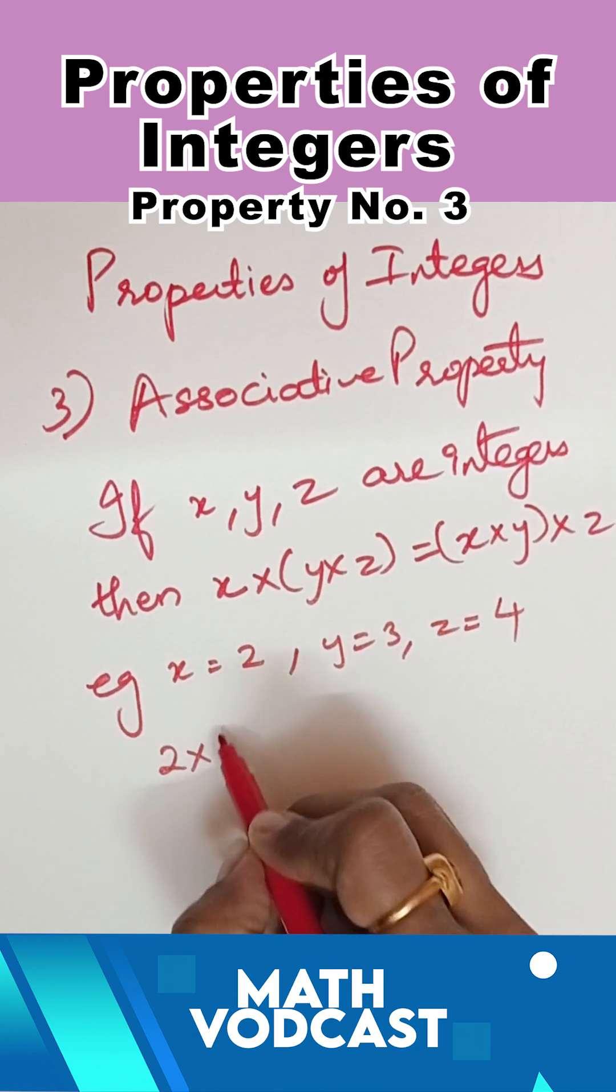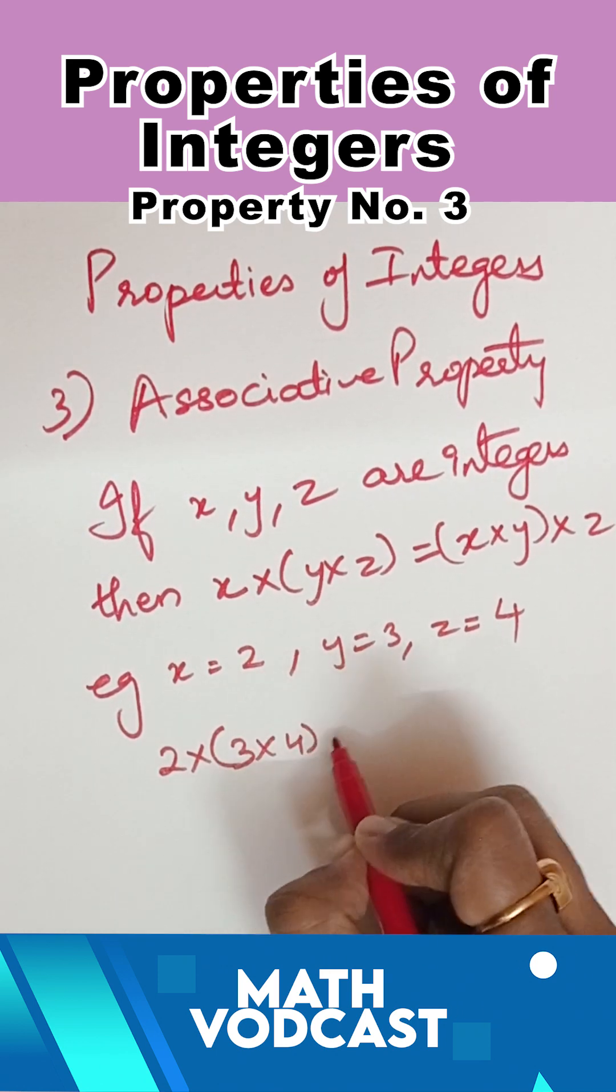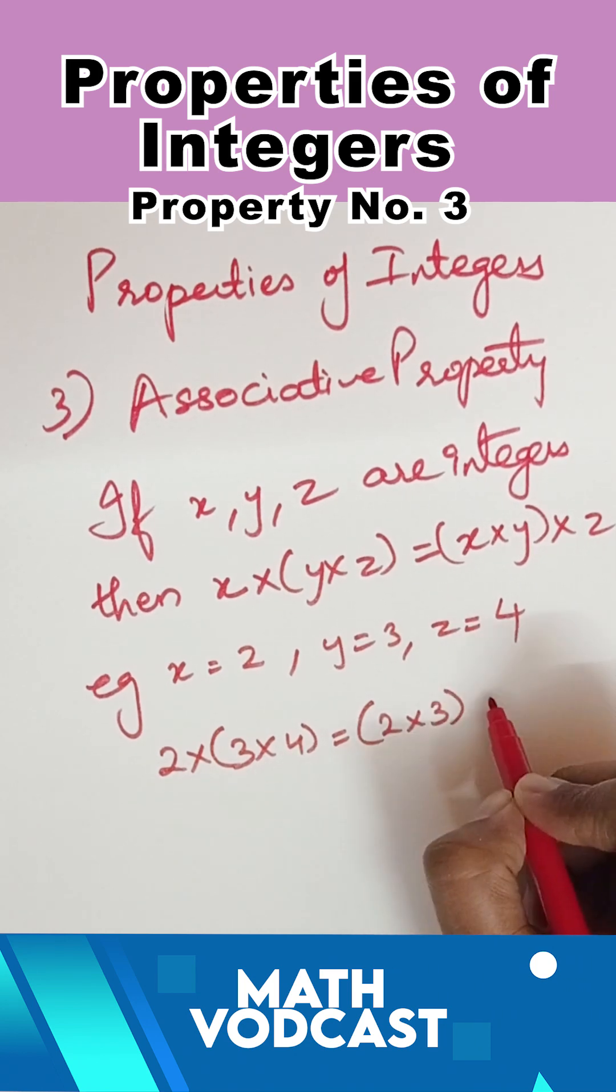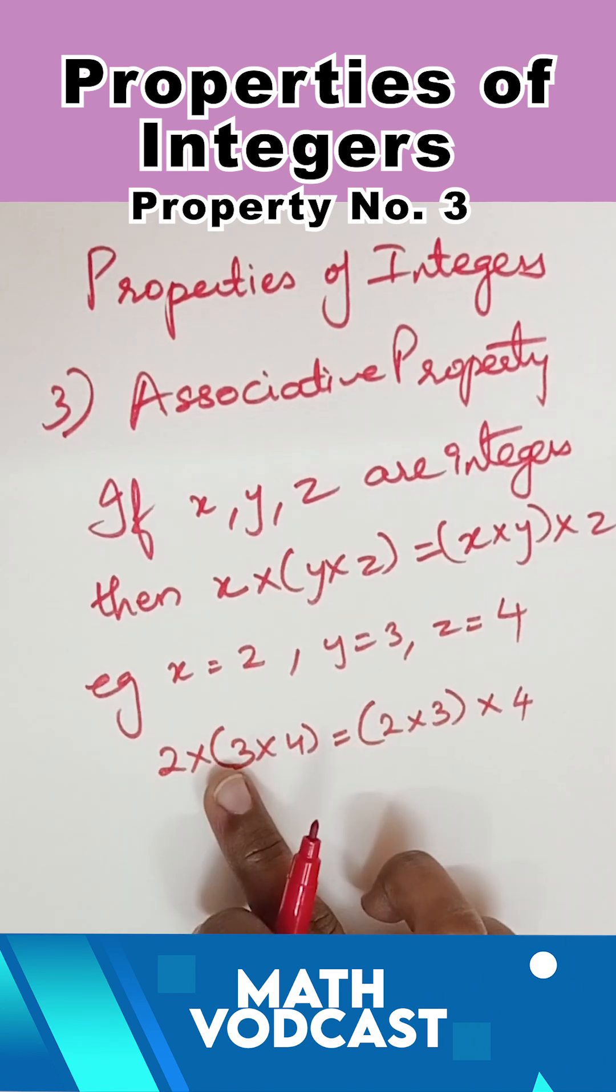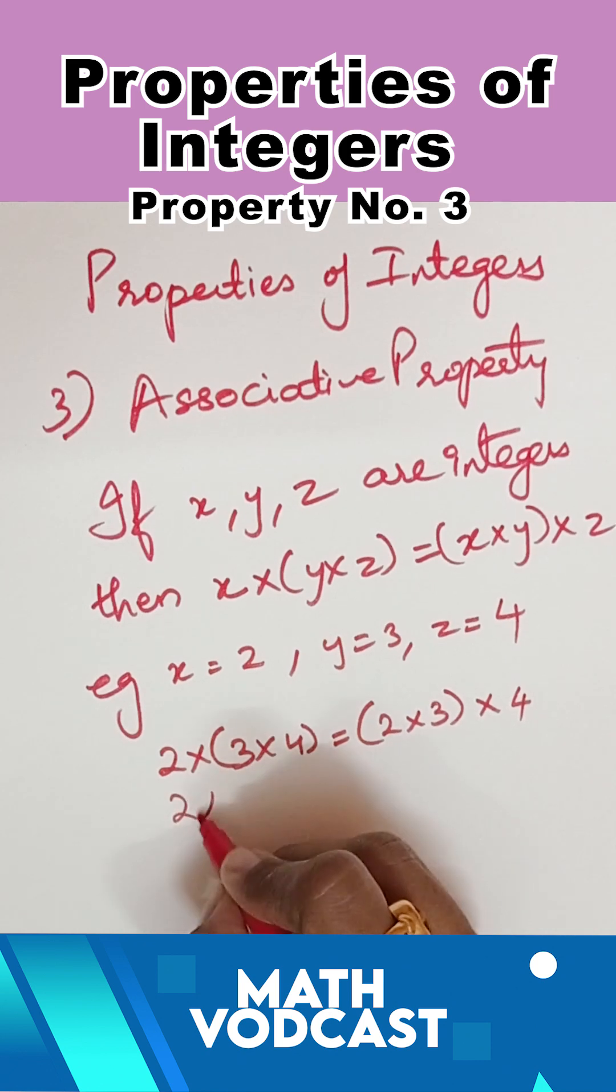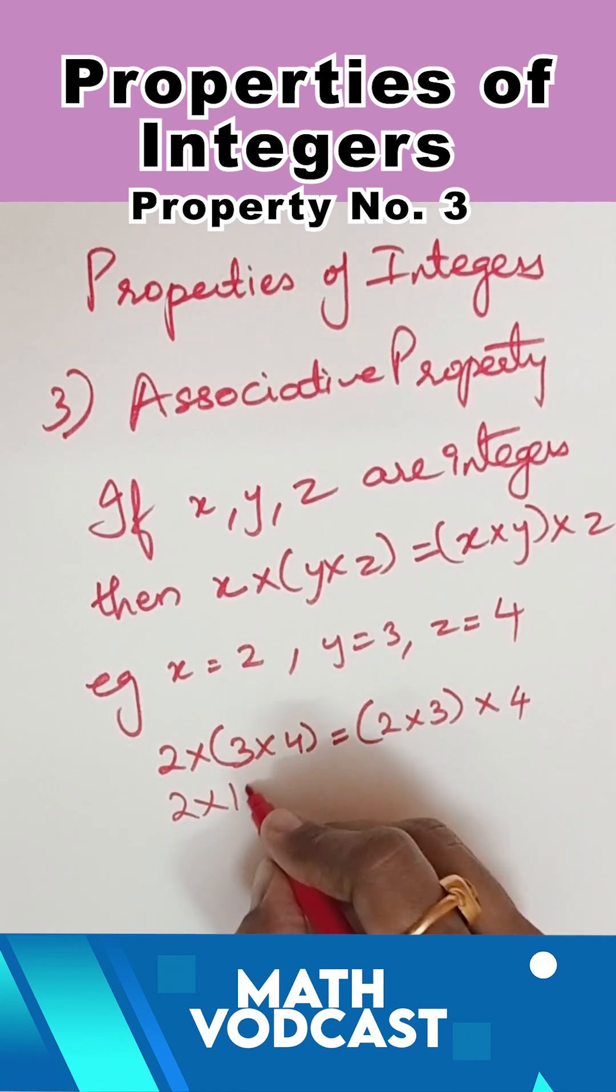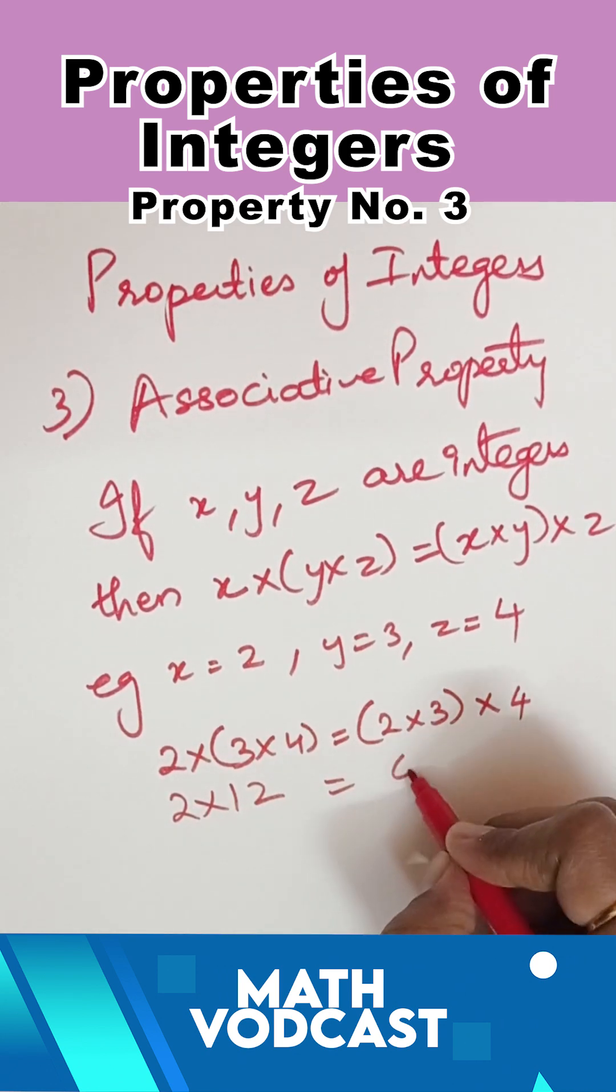So we are saying 2 into 3 into 4 equals 2 into 3 into 4. This is associative property. 3 into 4 is 12 which equals 2 into 3 is 6 into 4.